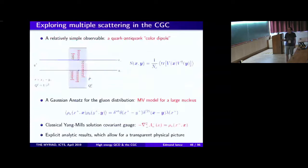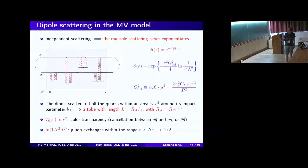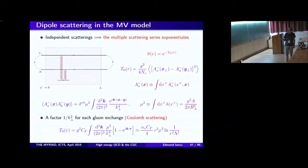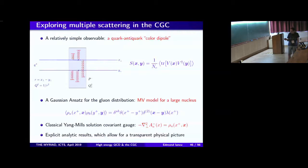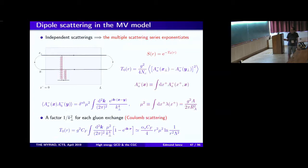Since we compute multiple scattering for a system of independent color charges, multiple scattering is as simple as single scattering — it's enough to exponentiate single scattering to get the multiple scattering result. The S-matrix is computed from the T-matrix for a single scattering T0, which is this quadratic form in the gauge field, averaged over the color glass wave function — in this case just a Gaussian. The gauge fields depend on x-perp for the quark and y-perp for the anti-quark, integrated over the longitudinal profile from 0 to L.